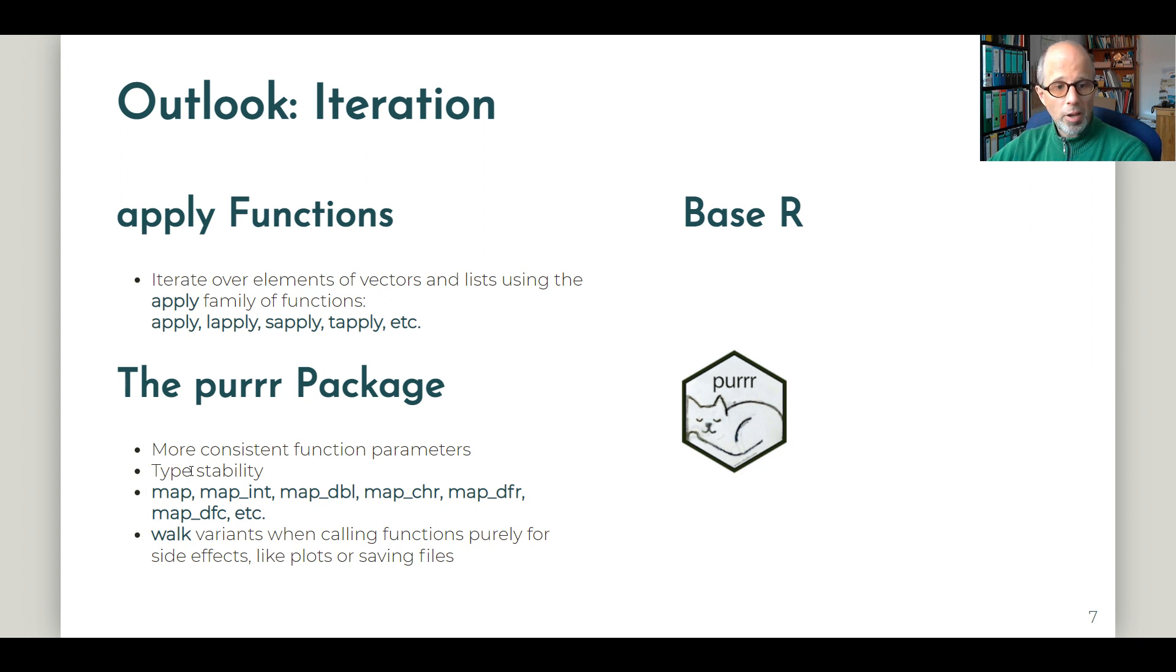In the purrr package, which is part of the tidyverse, you get map functions. Then you have variants of that indicating the object type or data type of the return value, like map_int for integer, map_dbl, map_chr, map_dfr by row, map_dfc by column, and so on. There are also walk variants when you call functions purely for side effects and you don't want anything printed to the screen.